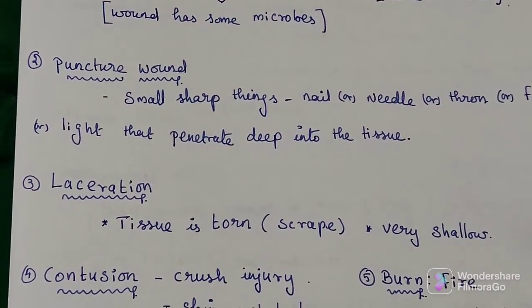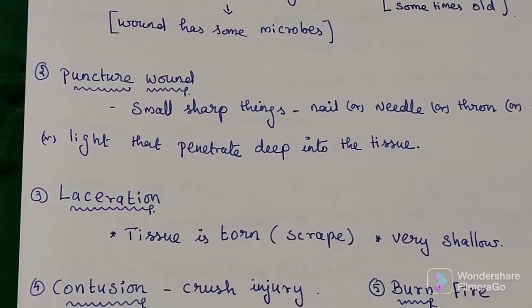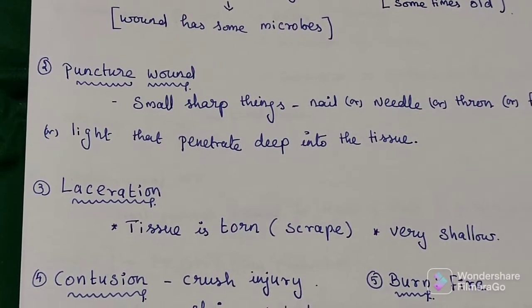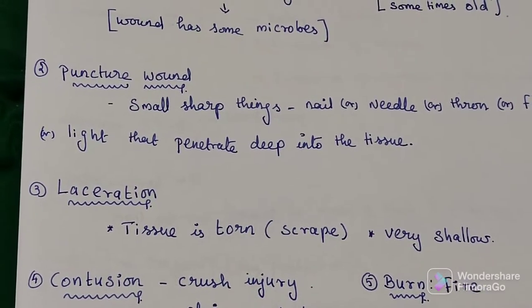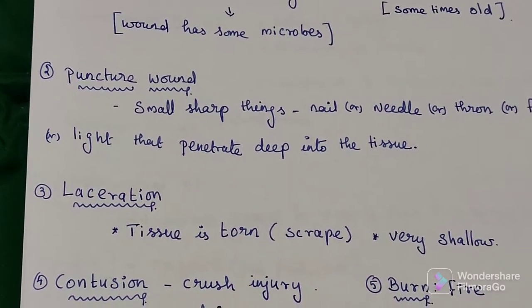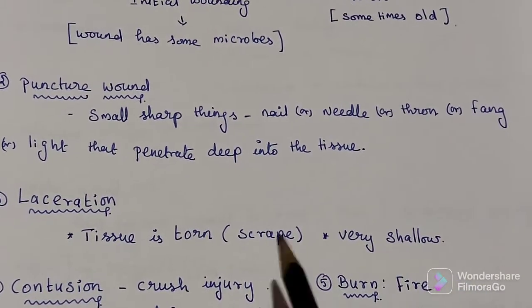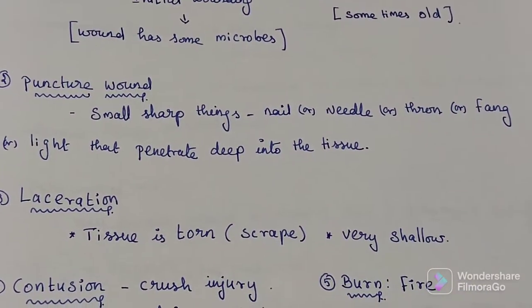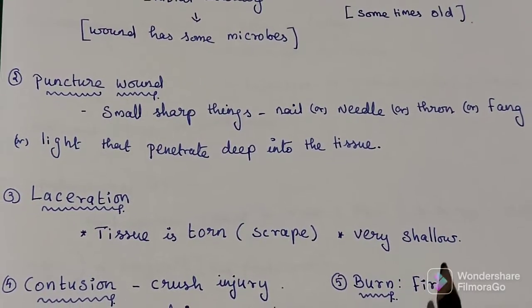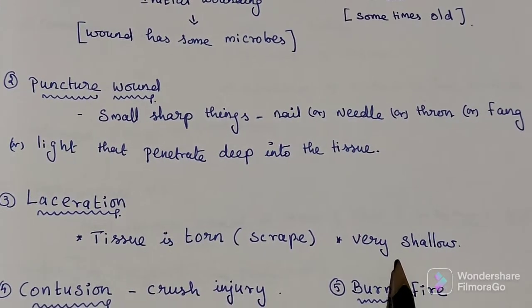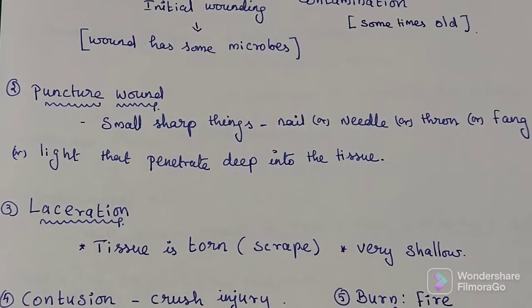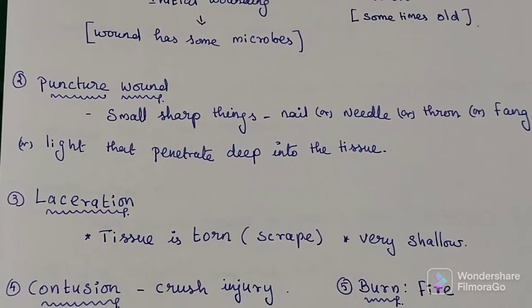The third possibility is laceration. Laceration is where tissue is torn — we would usually call this a scrape or tear. It is usually very shallow, so this type of wound infection does not pass microbes into deep tissue.